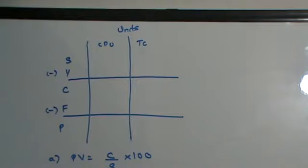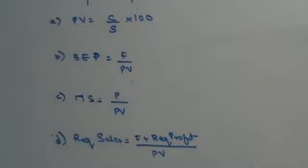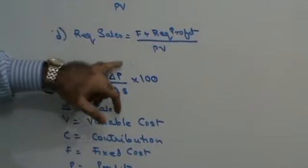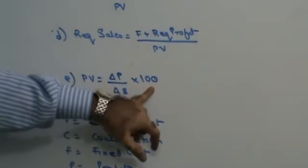PV is given by the formula C upon S into 100. VEP is F upon PV. MS is P upon PV. Required sales is F plus required profit upon PV. PV is also change in profit upon change in sales into 100.